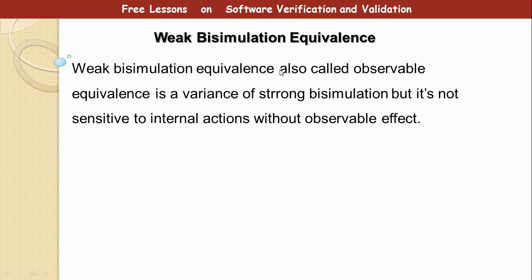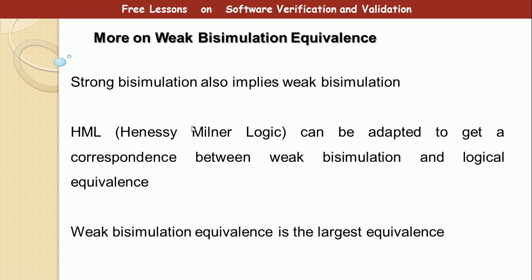Let's now move to weak bisimulation equivalence. Weak bisimulation equivalence is a variant of strong bisimulation equivalence. It is also called observable equivalence. It is a variant of strong bisimulation but it is not sensitive to internal actions without observable effects. Note that strong bisimulation equivalence implies weak bisimulation equivalence, and the Hennessy-Milner logic can be adapted to get a correspondence between weak bisimulation and logical equivalence. Weak bisimulation equivalence is the largest equivalence existing.